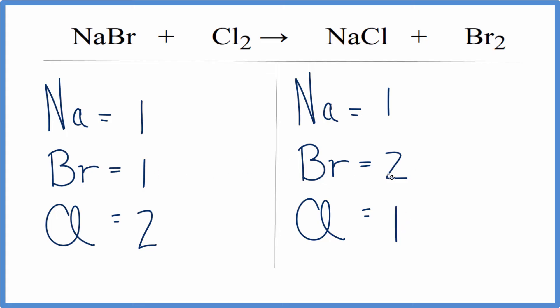Let's start by trying to fix the bromines. We have one here and two here. We can put a coefficient of two, and that will apply to the whole NaBr compound here. So now we have bromine, one times two. That will give us two, and that balances the bromines.